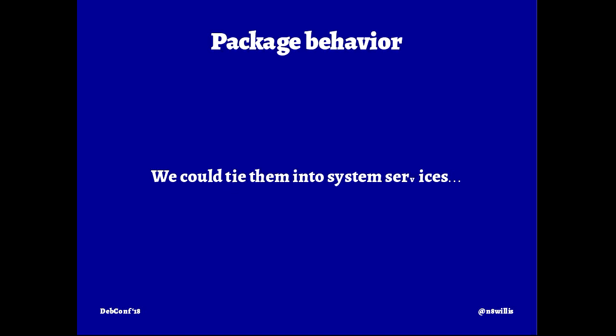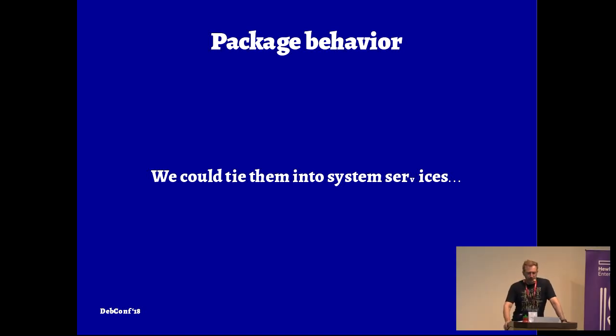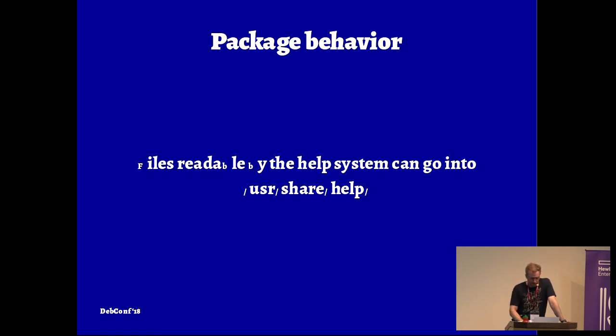We could do better. You could capture their existence and treat that as metadata to show the user in different places, and maybe tie them into system services. If the file resource is something readable by the help system, we could place it in /usr/share/help and it would automatically get picked up by the help browser like Yelp. I know that's a huge change, but that change alone — putting a help document in a different place — makes it accessible to the user in the desktop help system. And that's huge. Type foundries and Mac OS users complain about this because no other operating system does this.